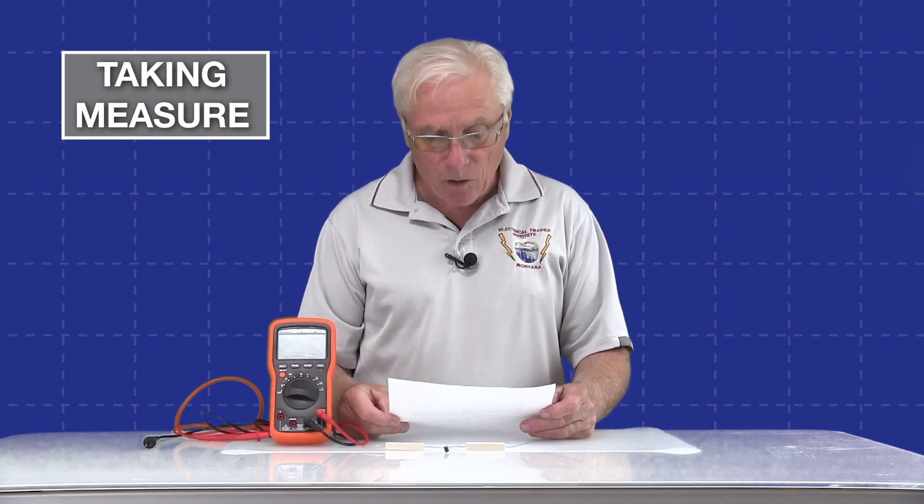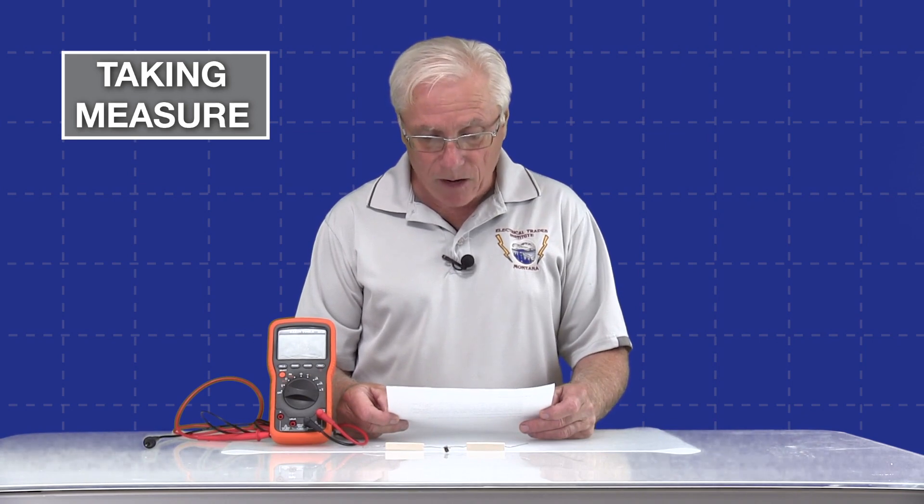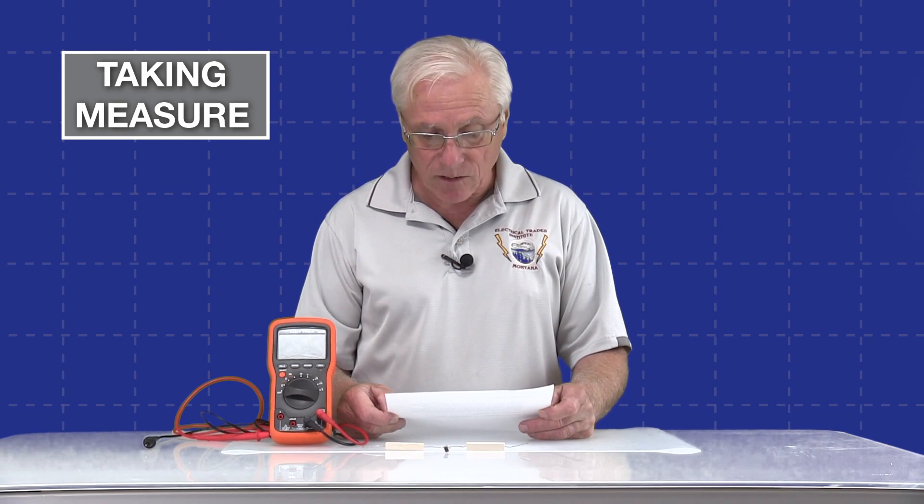This is delta or relative mode. It says delta mode, also known as relative mode, is a feature available on some digital multimeters that allow you to measure the difference or change in a value relative to a reference point. When you activate the delta mode on a DMM, it captures the quantity and stores it as a reference value.